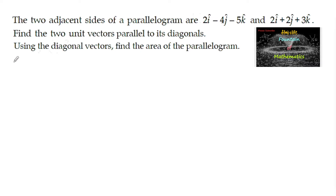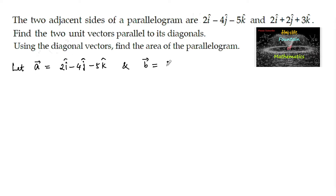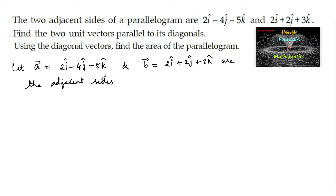Let vector a = 2i - 4j - 5k and vector b = 2i - 2j - 3k be the two adjacent sides of the parallelogram.